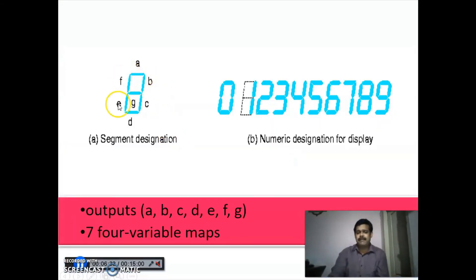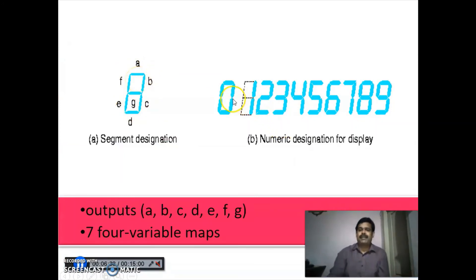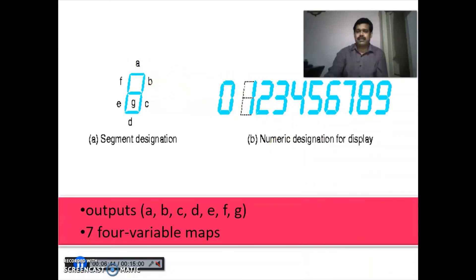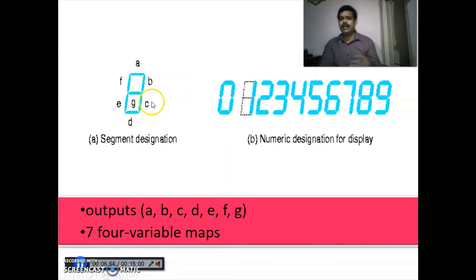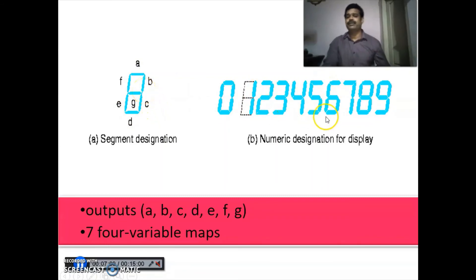For decimal 0, all segments except G are enabled. For 1, only B and C are enabled. Similarly for 2 through 9, we enable the appropriate segments. Now directly going for the truth table: inputs are A, B, C, D representing BCD digits 0 to 9, and the seven outputs are segments a through g. We put 1 for enabled segments and 0 for disabled segments for each digit.